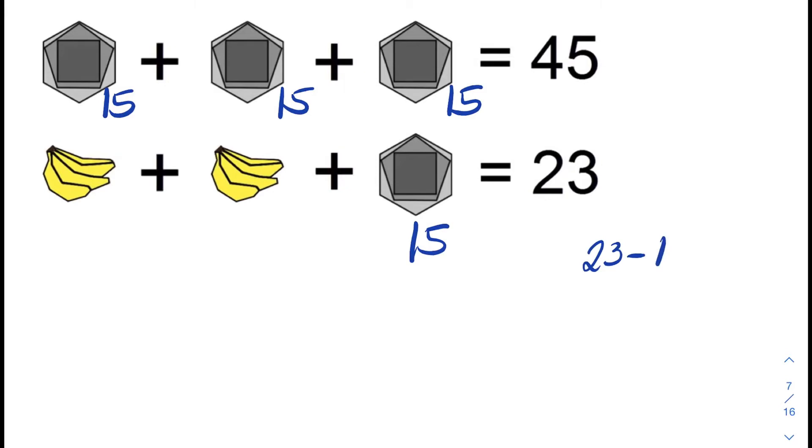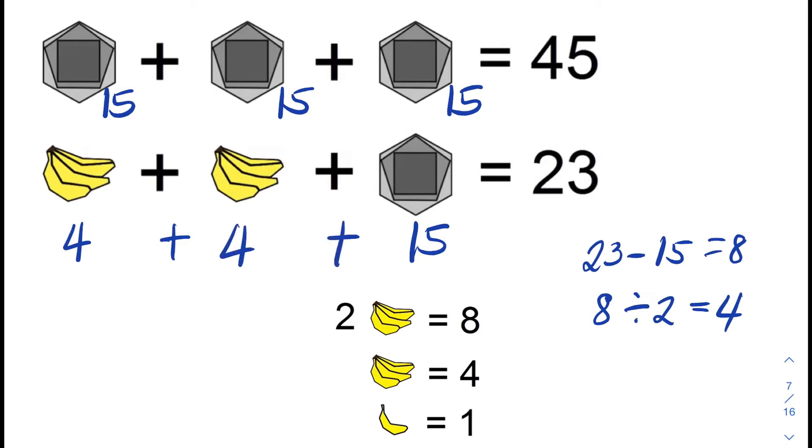And 23 minus 15 is equal to 8. Now we can divide 8 by 2 to find the value of each bunch of banana. And 8 divided by 2 is 4. So this means the first bunch of banana is 4, plus 4, plus 15 is equal to 23.